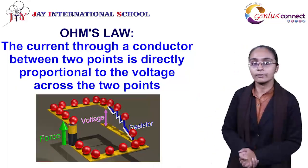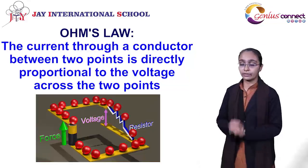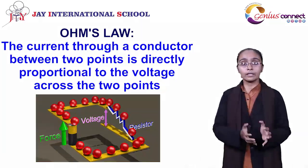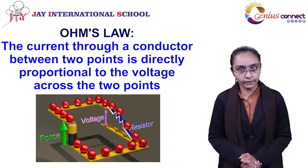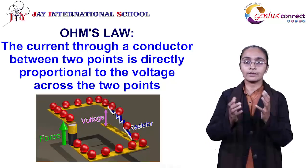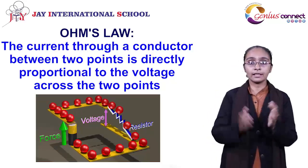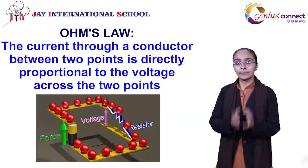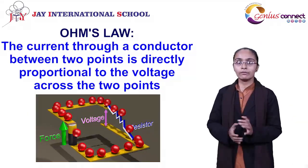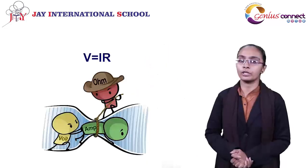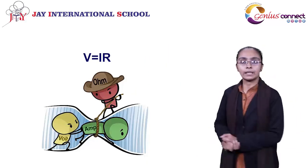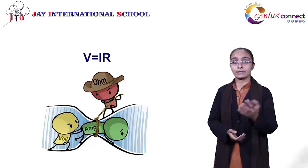When we understand how we can relate current and potential difference, that gives us the law by one of the greatest scientists, which is Ohm. When potential difference is directly proportional to the current, we get Ohm's law. There is a certain condition: temperature must be constant. So for the same temperature conditions, potential difference in the circuit is directly proportional to the current. If we remove the proportionality, we get one constant, which is resistance.